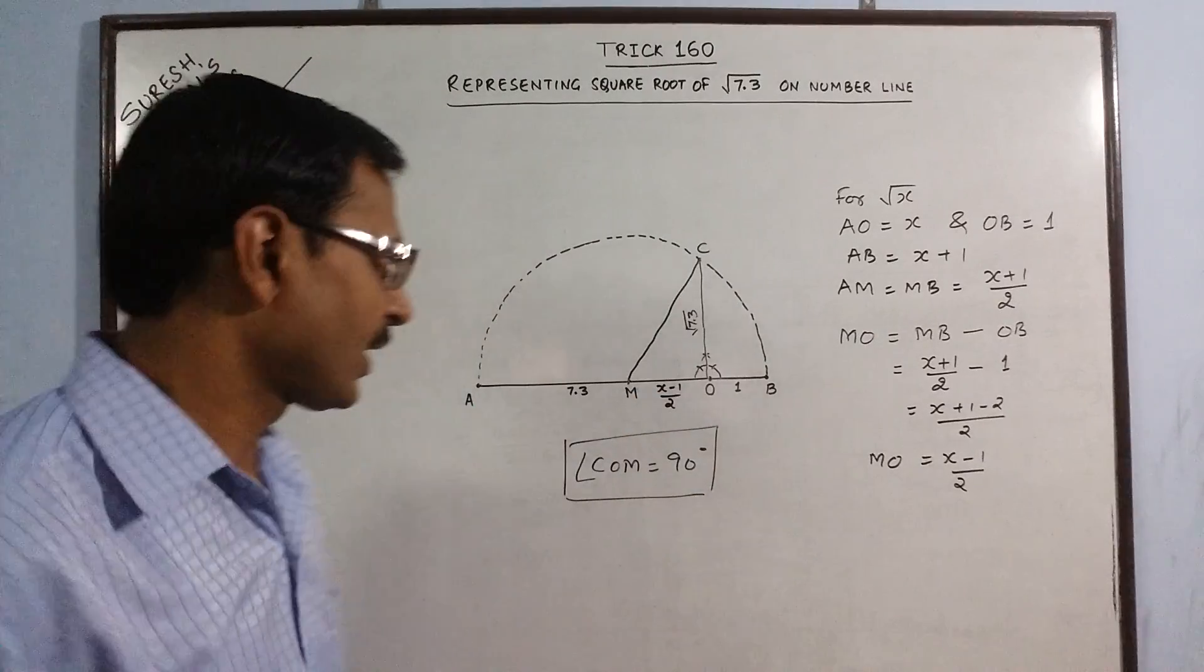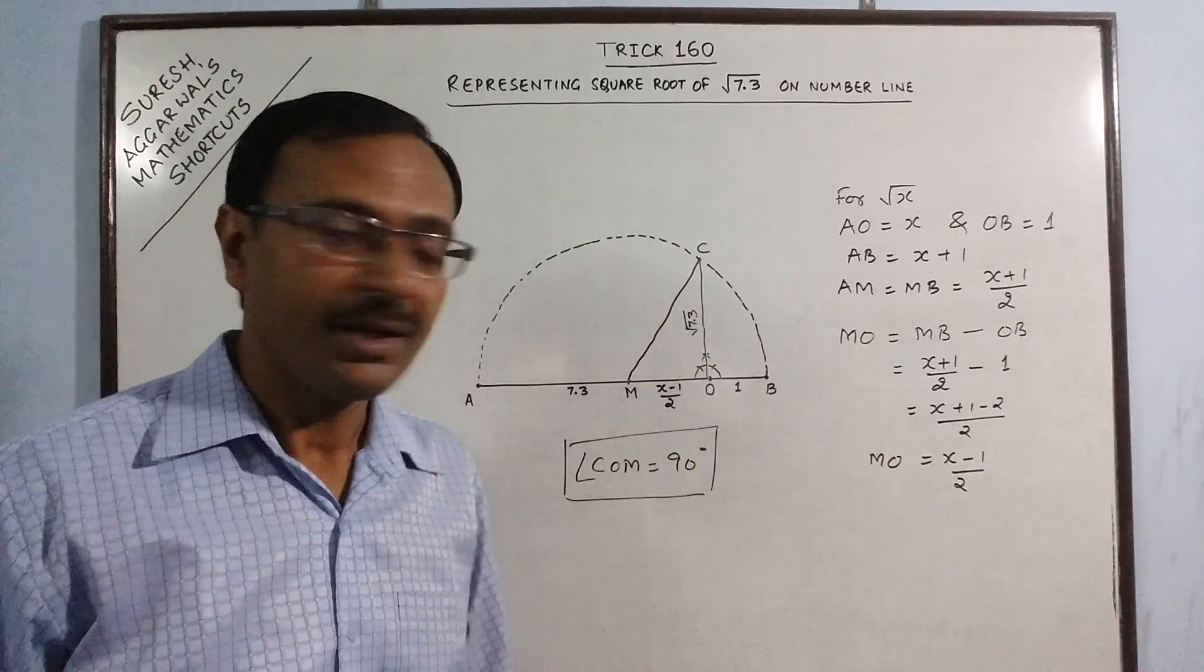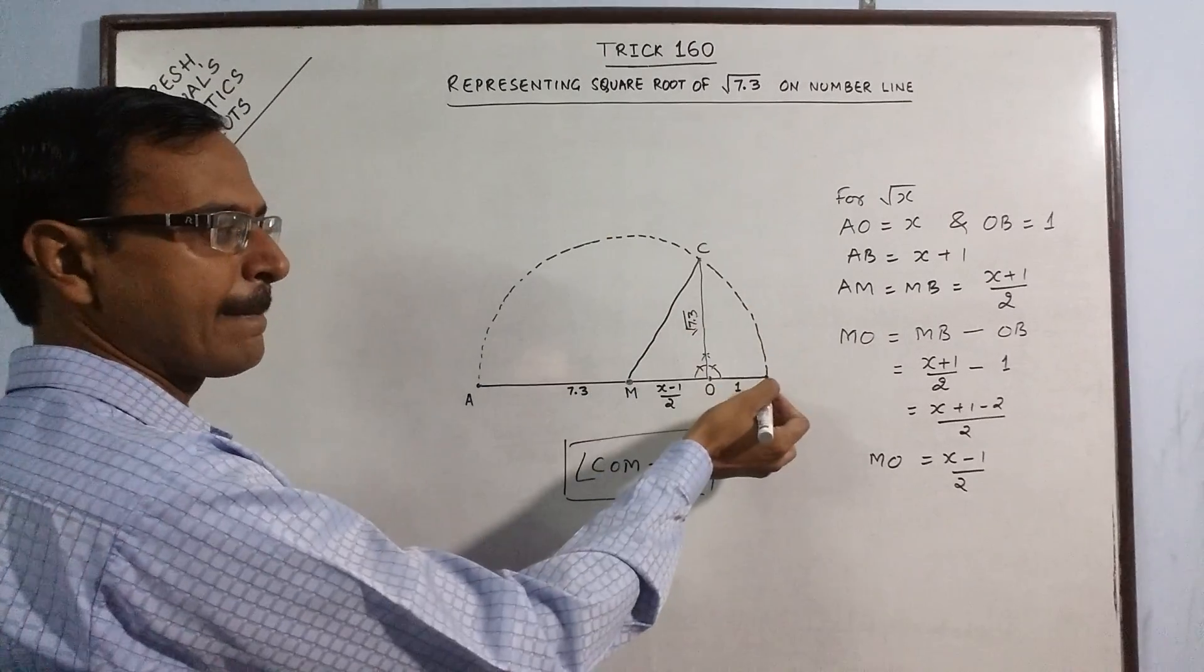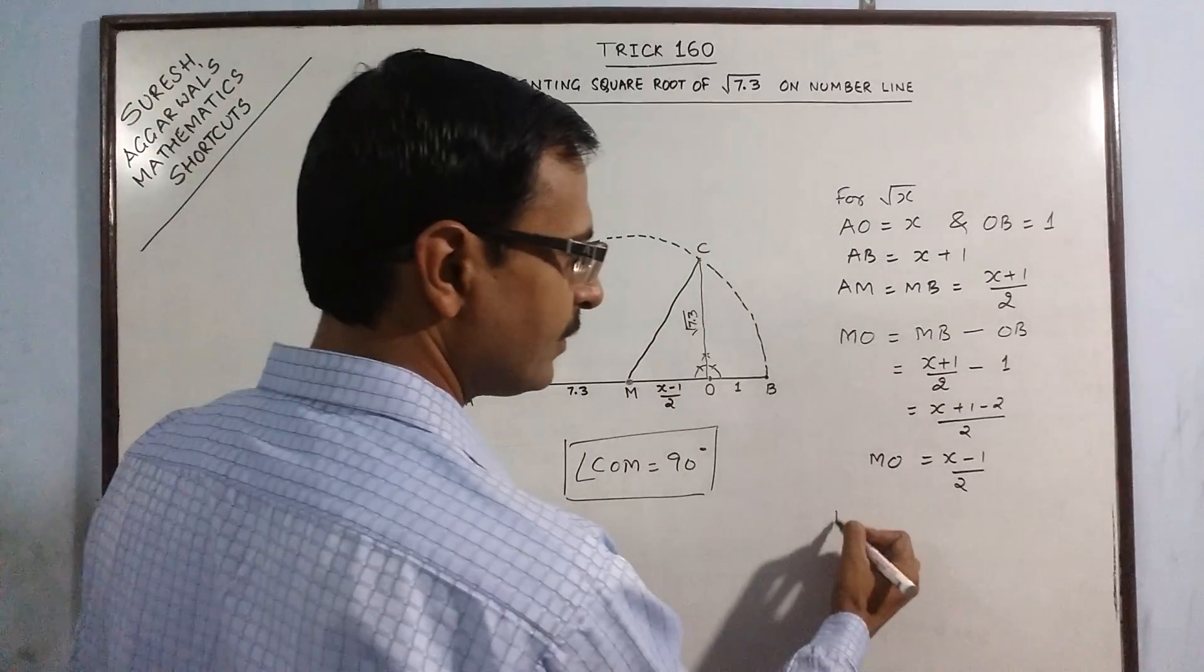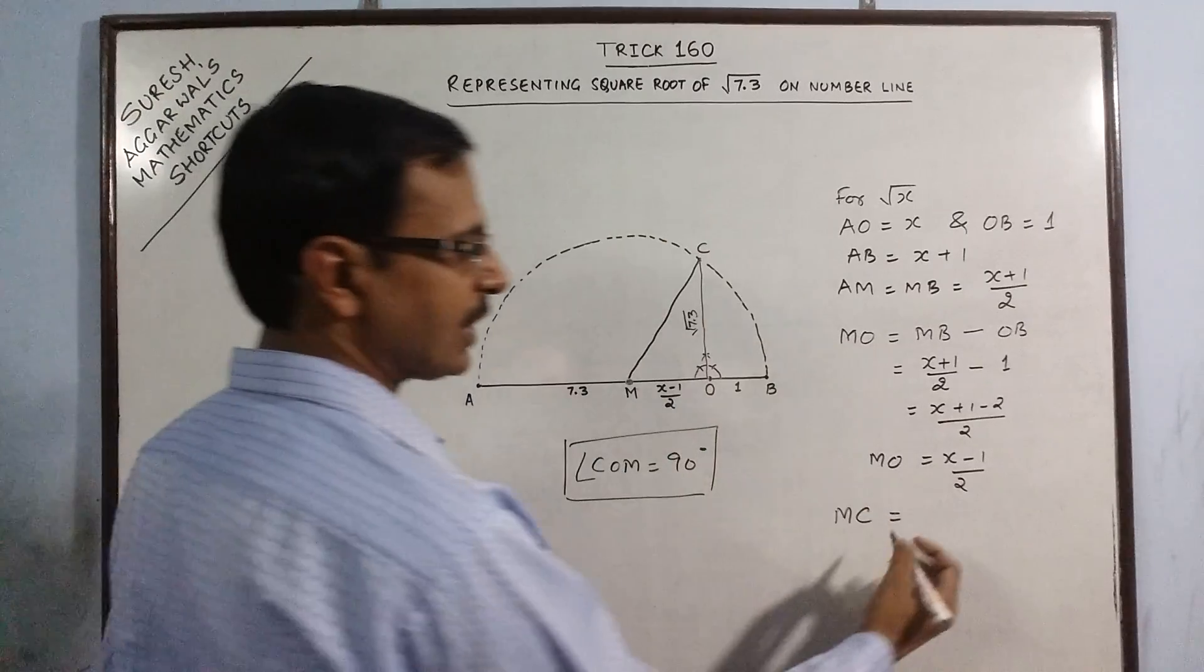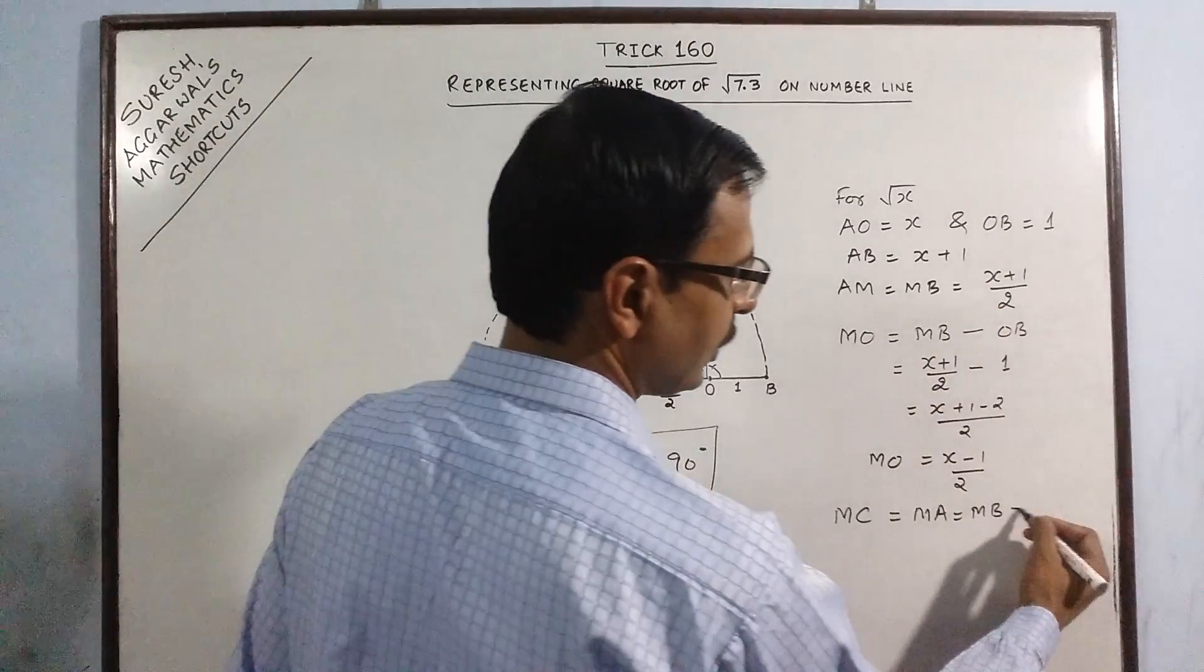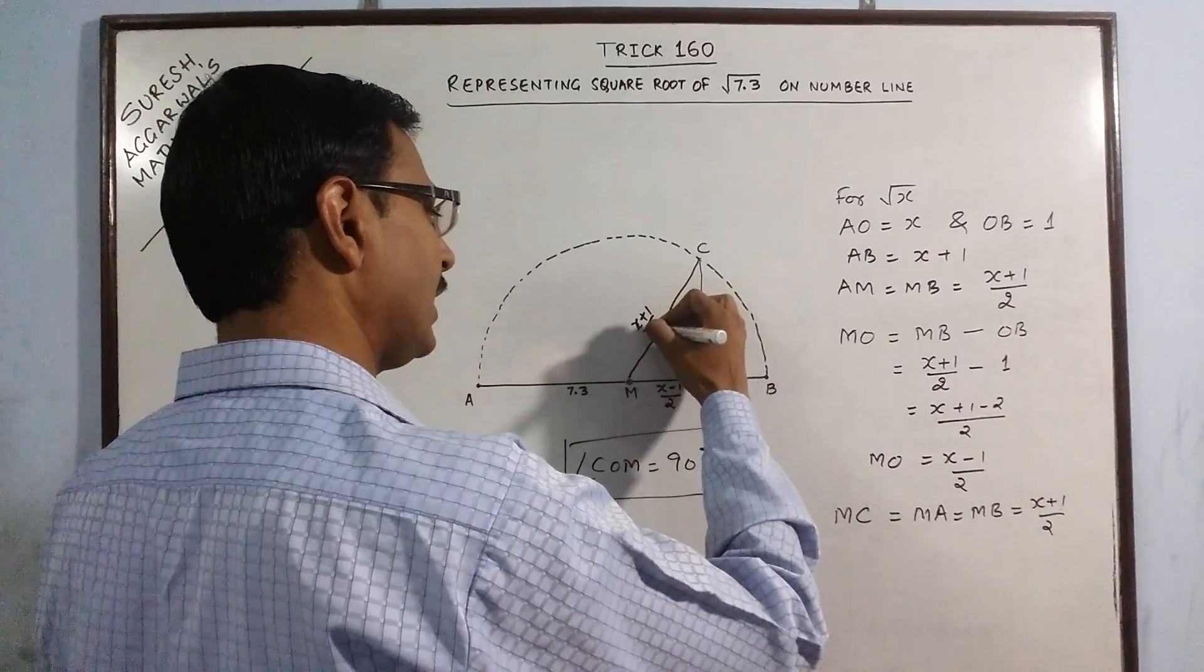One of my aims is already solved, I have found out the base of the right angle triangle. Now come to MC. See, this is the center of this semicircle, so MB, MA, and MC all are radii. So MC is equal to MA equal to MB, all are radii, and what is MA? MA is actually (x+1)/2. So the hypotenuse comes out to be (x+1)/2.